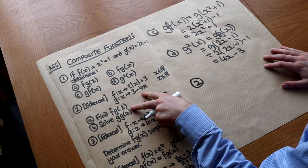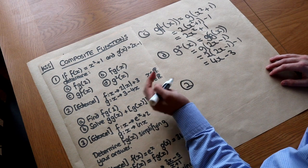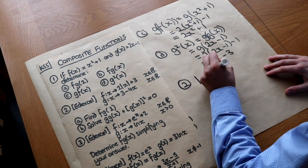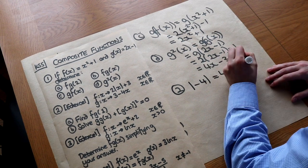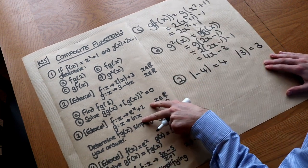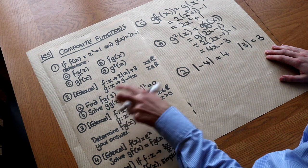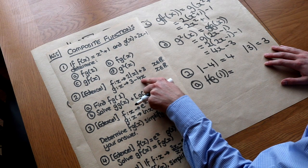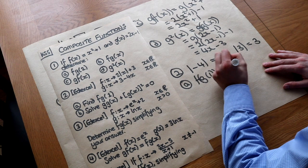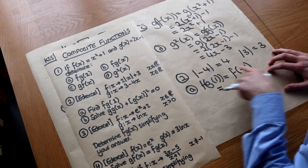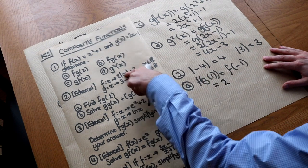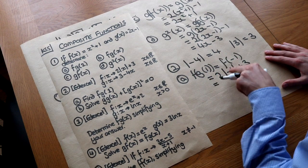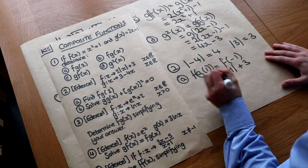For the second question, you need to know what the modulus function is. It takes the input and makes it positive even if it was negative. So |−4| = 4 and |3| = 3. For question 2a, find f(g(1)). g(1) = 3 − 4×1 = −1, so we do f(−1) = 2×|−1| + 3 = 2×1 + 3 = 5.